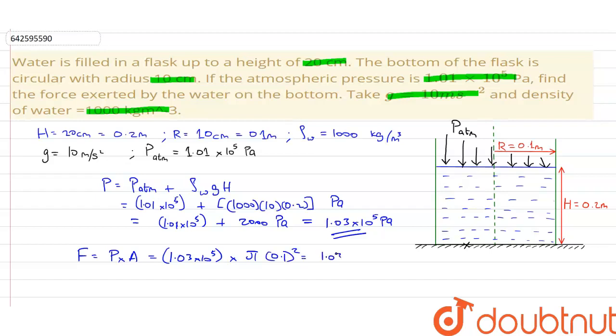1.03 into 10 to the power 5 into pi upon 100. The force will come out to be 3230 newtons. So this is our answer.